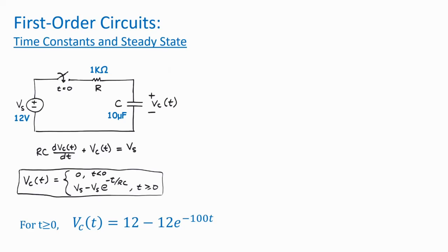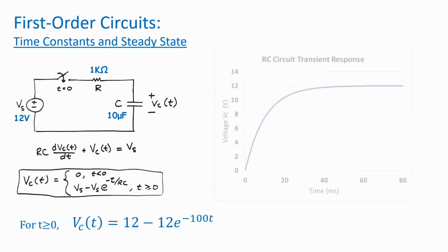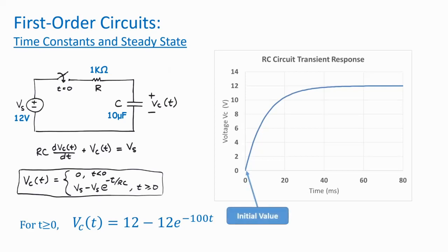This equation describes the capacitor voltage after the switch is closed at t equals 0. Here's a plot of Vc(t). First, notice that Vc starts at an initial value of 0 volts. When we derived the equation, we figured out that the initial voltage was 0 volts because the capacitor was initially uncharged when the switch was closed.